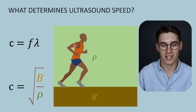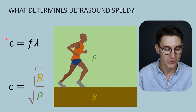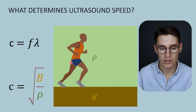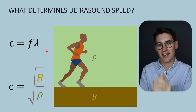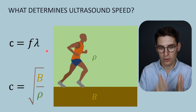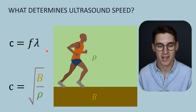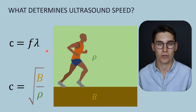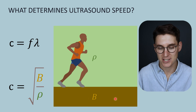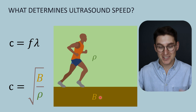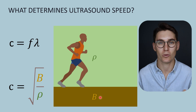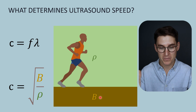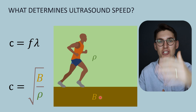A helpful analogy is that of a running man. The speed of sound is a function of frequency and wavelength. Take a runner running at a set cadence — their cadence doesn't change; they are like the ultrasound machine making a set frequency. Their speed is determined by the ground they are running on. I like to think of bulk modulus as that ground: the harder and stiffer the ground, the faster the runner goes. Running at a set frequency on hard ground, their stride length — their wavelength — will be longer.